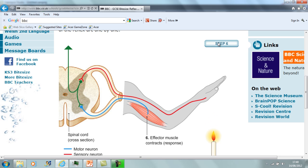This causes the muscle to contract and it pulls the hand away from the heat. This is known as a reflex arc because it doesn't involve the brain, it only involves the spinal cord.